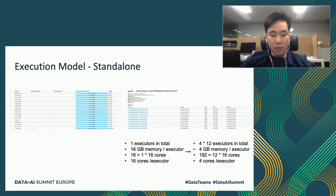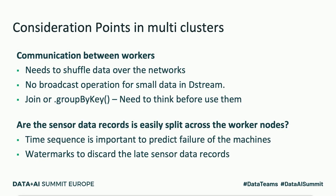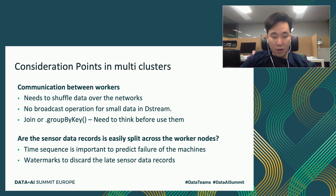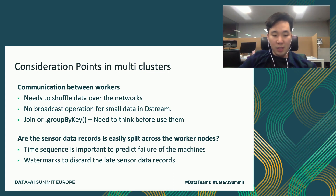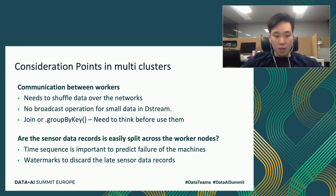Compared to standalone mode, more resources can be utilized by adding more nodes. We set up 12 nodes using our private cloud server. When running the application in multi-clusters, there are some considerations. In our system, the key is the asset ID, which means data records with the same asset ID are assigned to the same node. Therefore, we need to be careful when using join or group-by-key methods, which invoke shuffling between nodes. Note that there is no broadcast operation provided in DStreams, so it is recommended to convert the RDD into a DataFrame or structured streaming. In addition, time sequence is important to pinpoint the failure time of the machine, so ordering sensor data records in time sequence is very important.